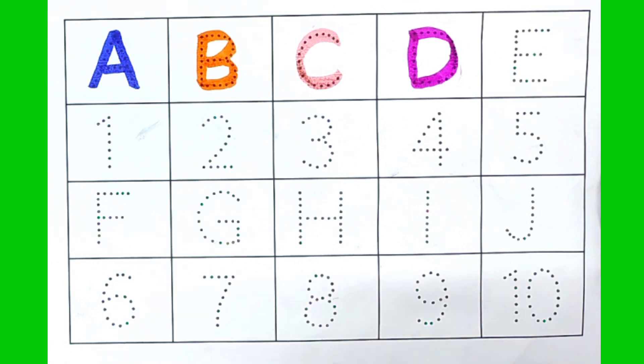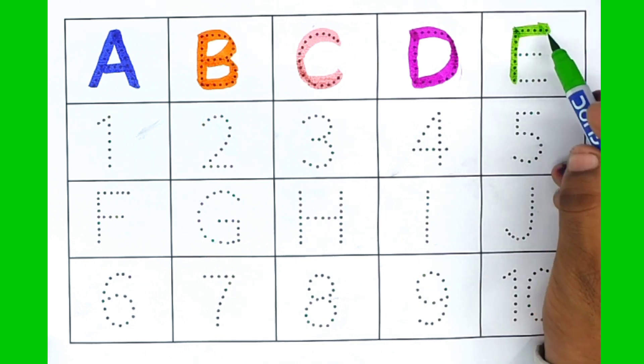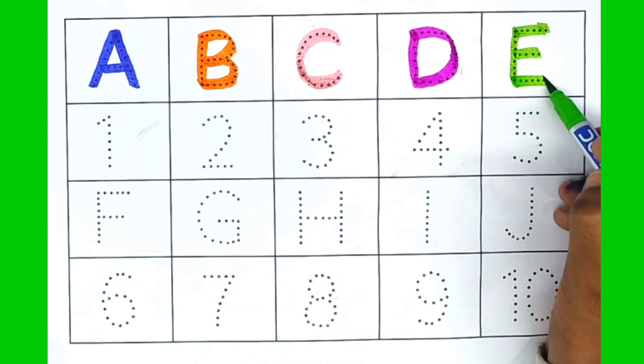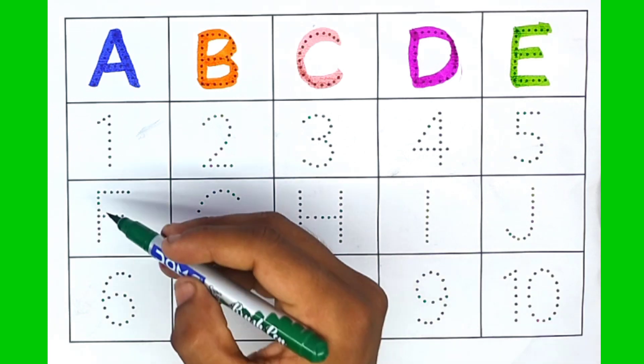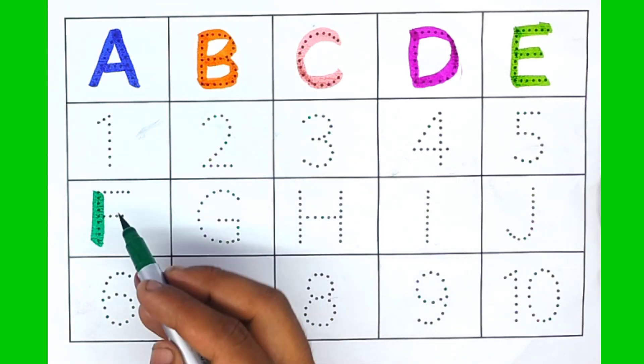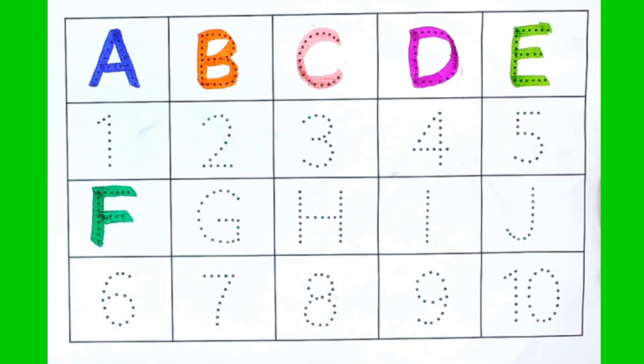Purple color. E. E for elephant. Green color. F. F for fish.